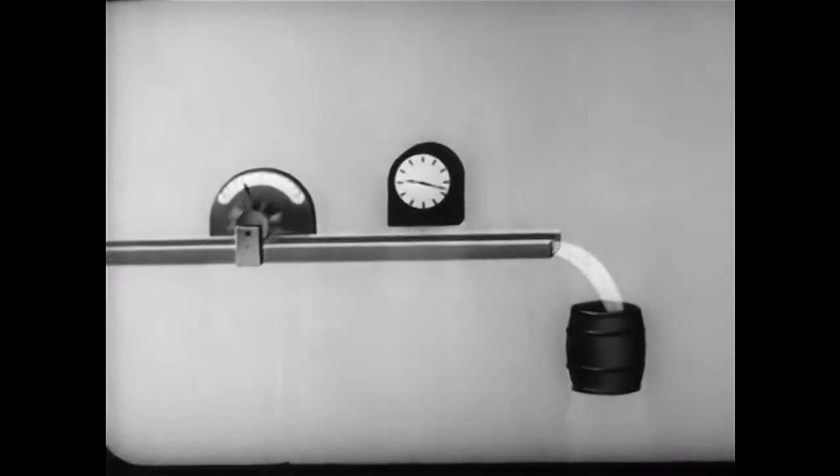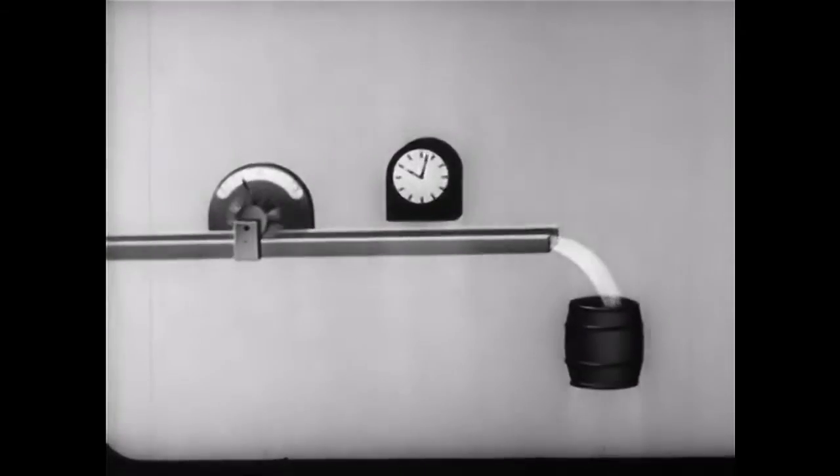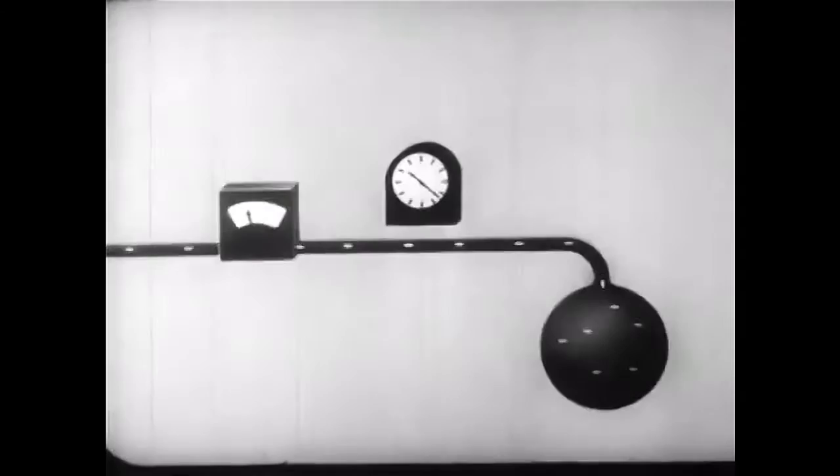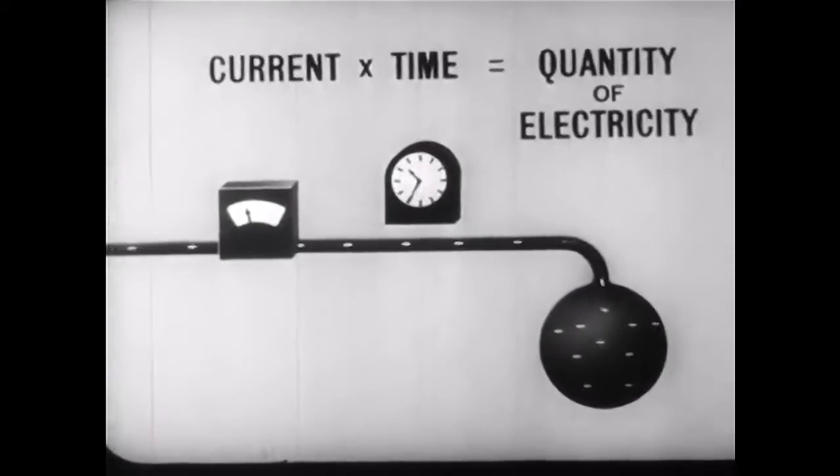Just as in flowing water, the total quantity of water is the product of the rate of flow by the time of flow. So in the case of electricity, the product of current by time measures the total quantity of electricity.